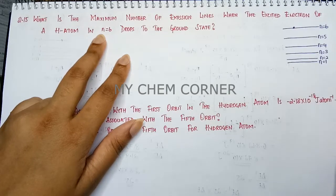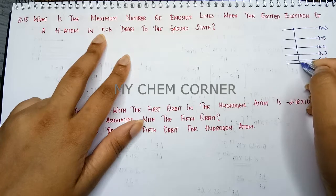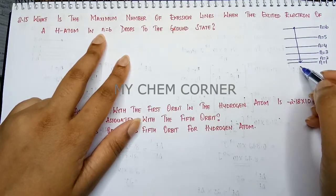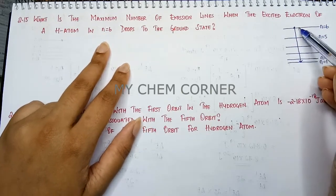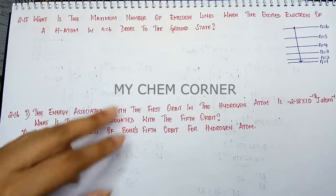So as per the question, an excited electron is present in the sixth orbital. When it drops down to the ground state, how many possible emission lines can be seen during this entire transition from n=6 to n=1? That is the question.